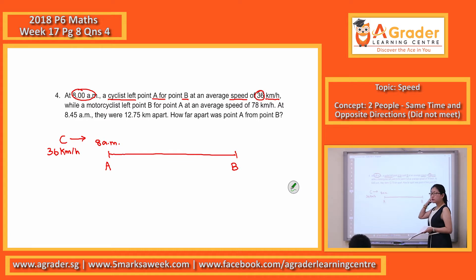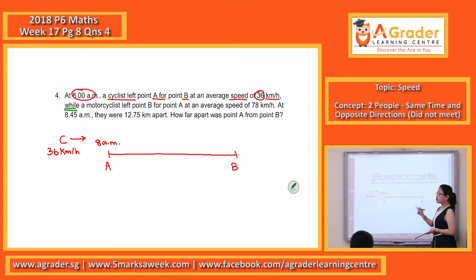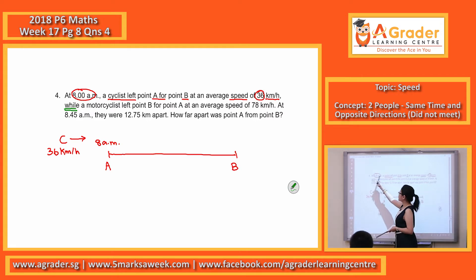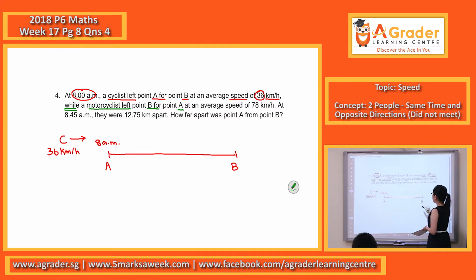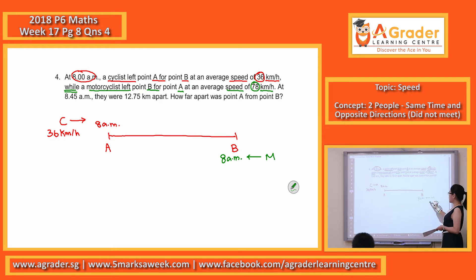The whole sentence is a bit long, so I'm going to use another colour to show. While — 'while' actually means at the same time, so you have to know that it's also 8am — a motorist left point B for point A, so in this direction, the motorist, at an average speed of 78km per hour.